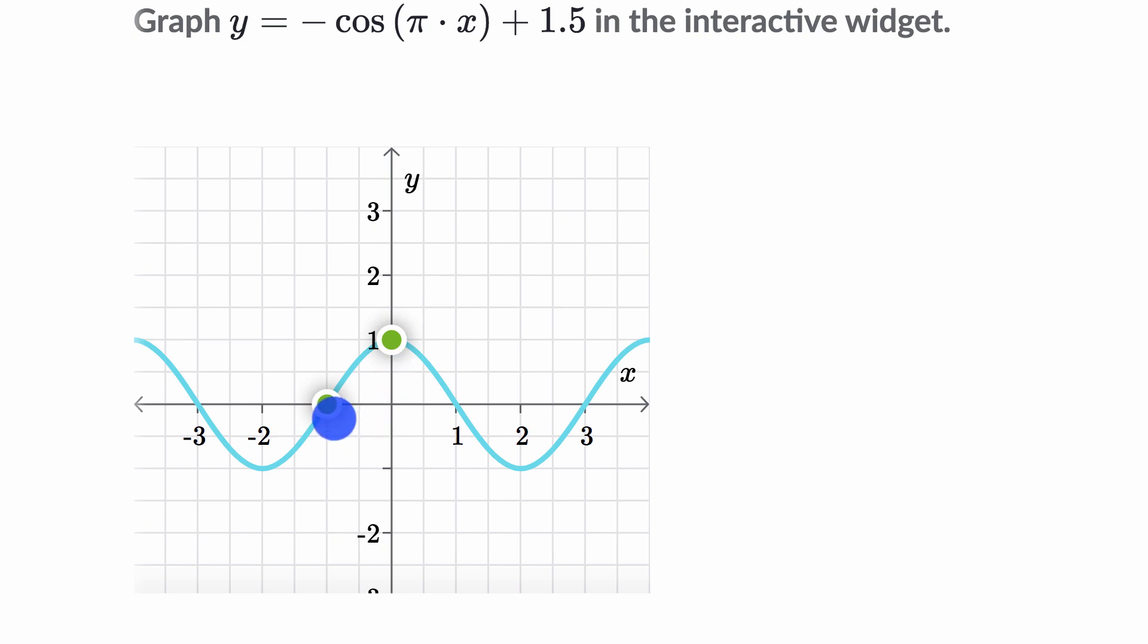And so how do we construct a period of two here? Well, that means that as we start here at x equals zero, we're at one. We want to get back to that maximum point by the time x is equal to two. So let me see how I can do that. If I were to squeeze it a little bit, that looks pretty good.